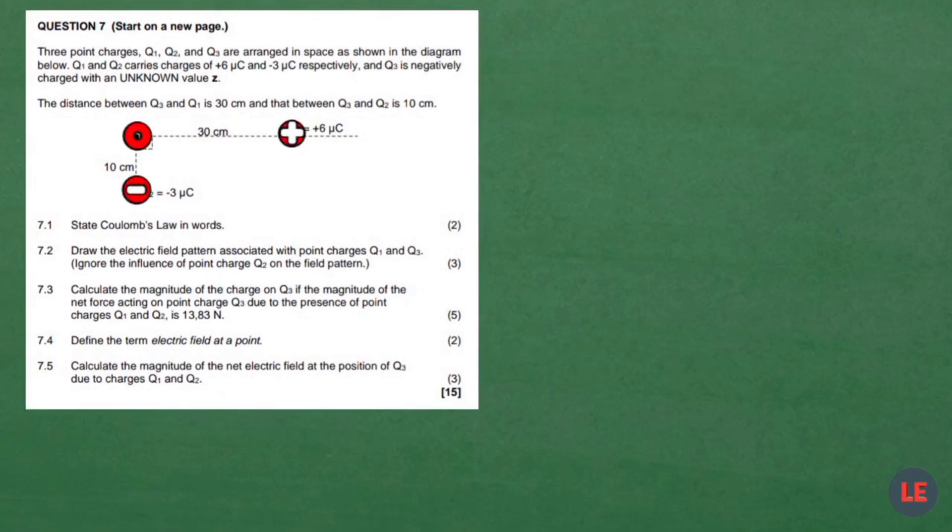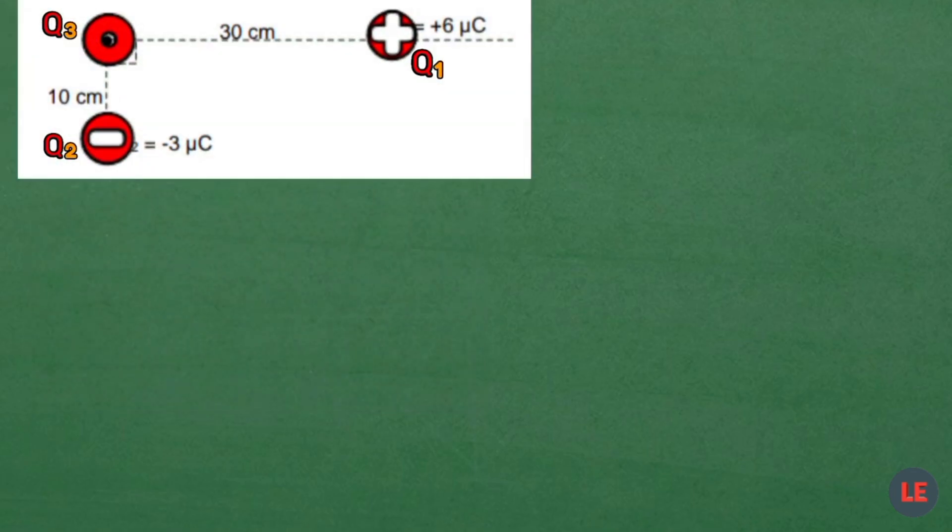Let us look into this problem which has three charges. This time charges are not arranged in a line, but they are arranged in a triangle shape as you see on this diagram.